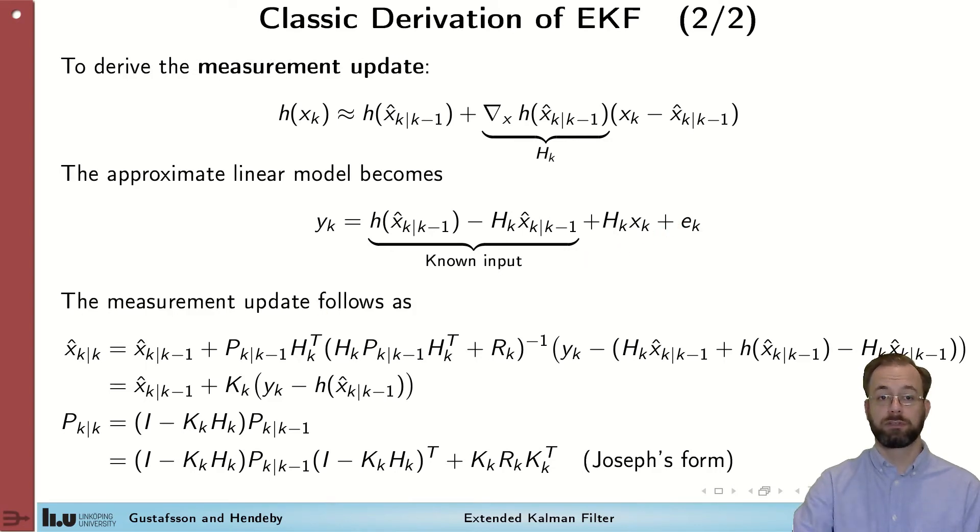This model can now be used in the Kalman filter measurement update equations, and we get this. The term here is quite more involved than in the normal Kalman filter, but observing that this one here and this one are identical and cancel out, we get the more familiar short form here. Furthermore, the covariance update is exactly the same as in the Kalman filter, with the exception that here H is not a constant, but rather the Jacobian of the measurement function h. To avoid numerical issues, we recommend that you use Joseph's form for the covariance update in this case.